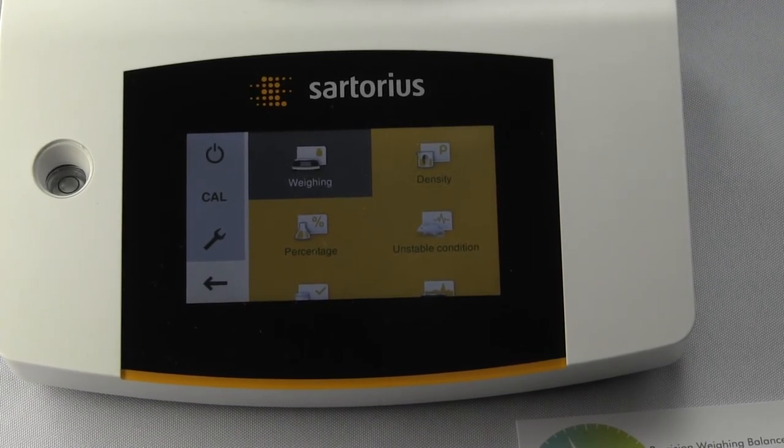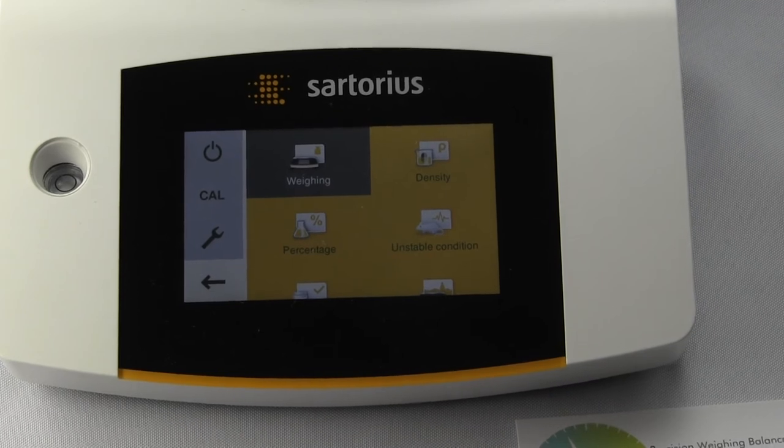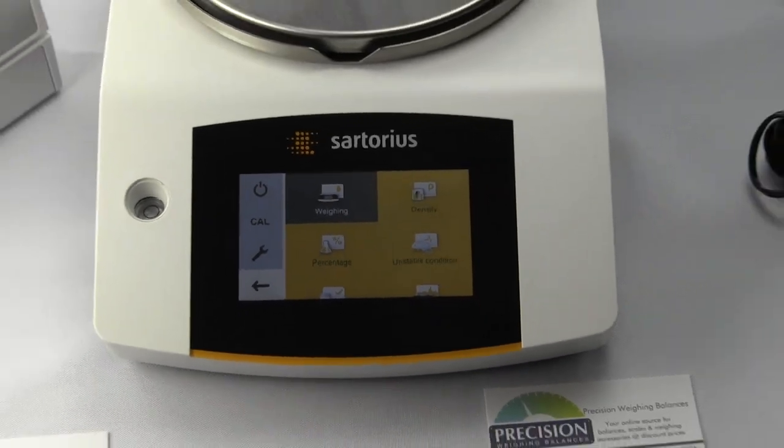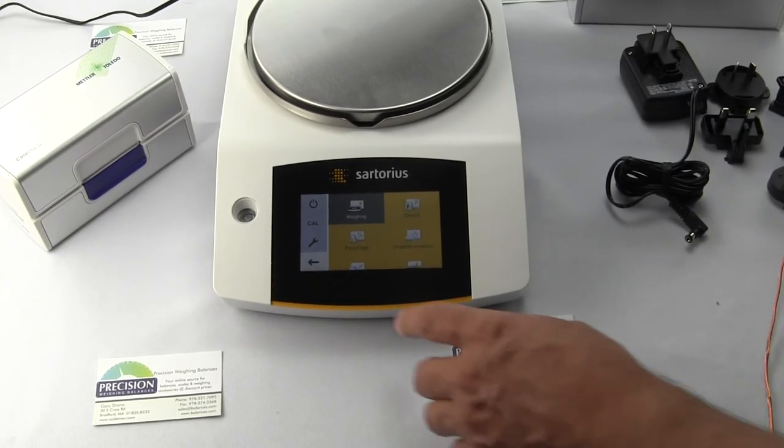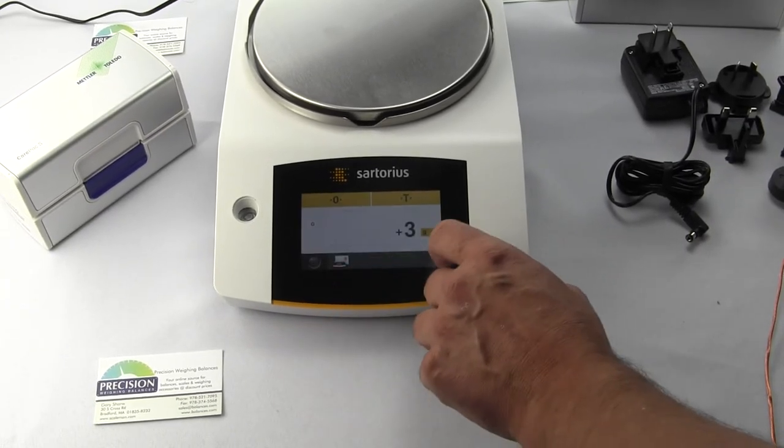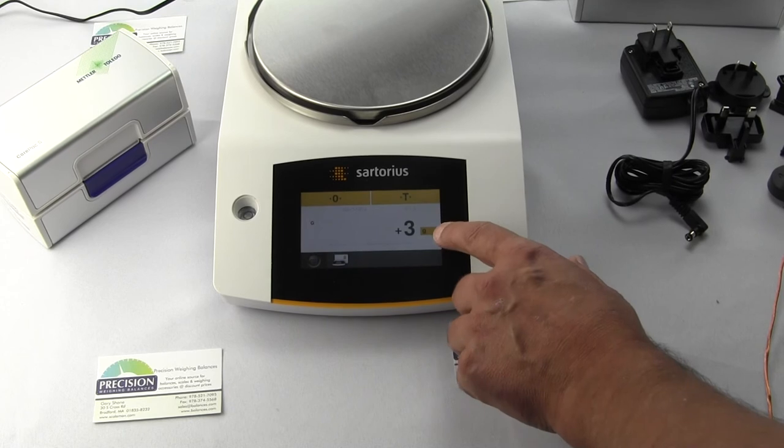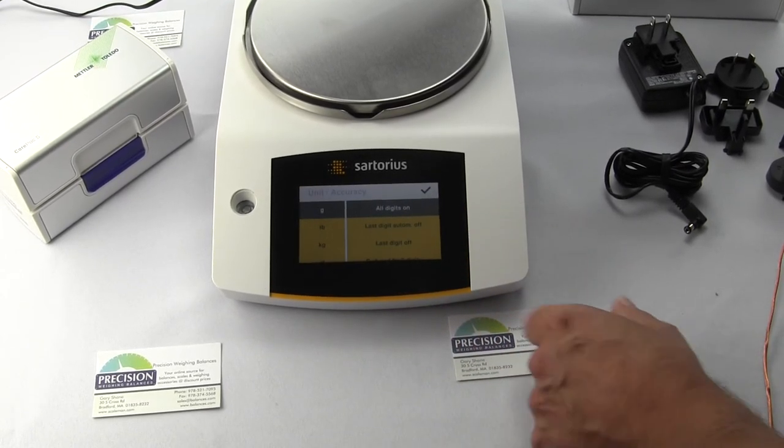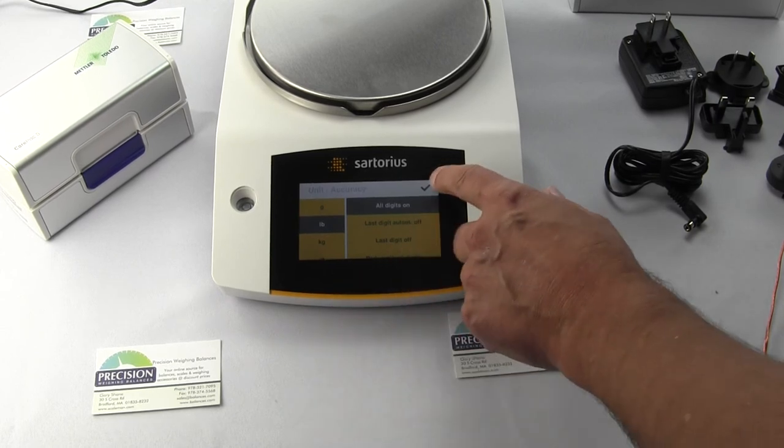Laboratory science classrooms and quality control looking for a nice gram scale, this could be the perfect solution—the Practum series. This particular model increments in one gram divisions. To change the weight mode, right now we're in grams, you can go to pounds. Very simple to tare—just hit the tare button. It's a very intuitive balance.